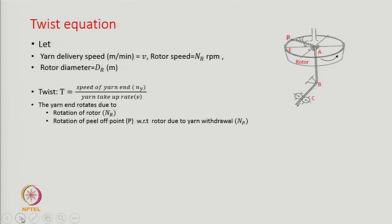We need to know the speed of the yarn end — the speed of the point P is not given, which we need to find out. The yarn end rotates due to rotation of the rotor and the rotation of the peel-off point P with respect to the rotor due to yarn withdrawal.